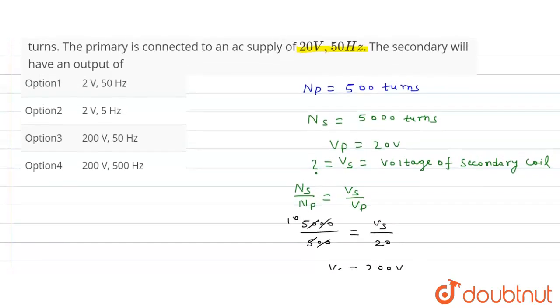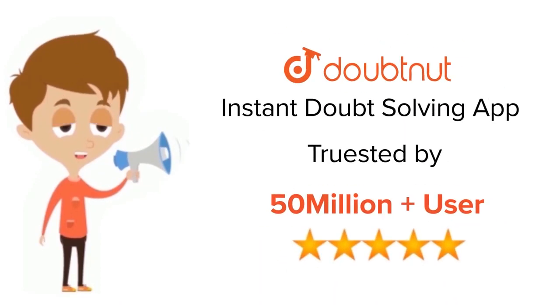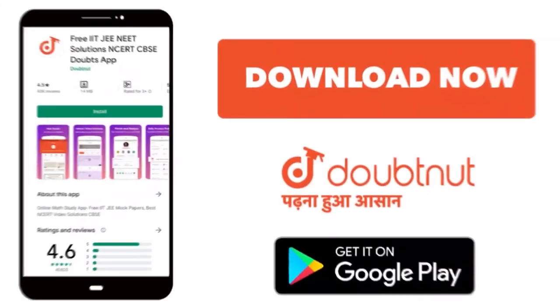So answer will be 200 volt and 50 hertz. So see here, option C is the correct option. Thank you. For class 6 to 12, IIT-JEE and NEET level, trusted by more than 5 crore students. Download Doubtnut app today.